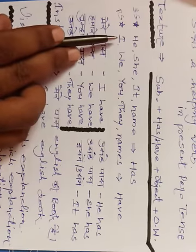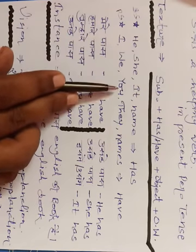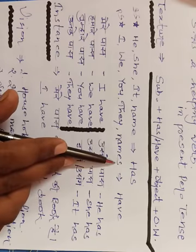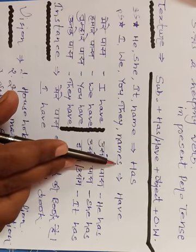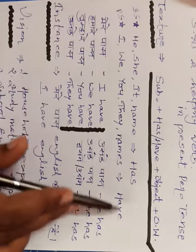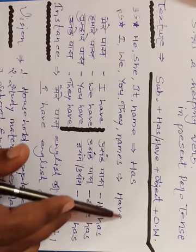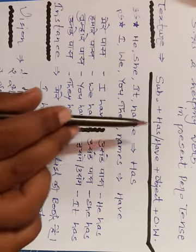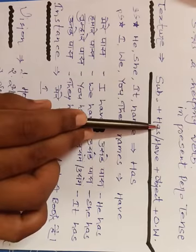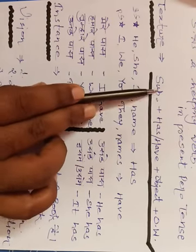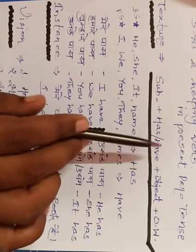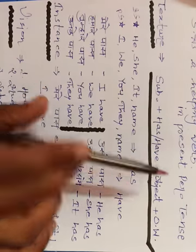Uske paas ek English ki book hai — he has an English book. Ladki ke sense mein bhi: uske paas ek English ki book hai — she has an English book. Isi tarike se aap bahut saare examples set kar sakte hain — mere paas, unke paas, tumhare paas. Agar name mein jaayenge toh: Ram ke paas, Shyam ke paas, Rahul ke paas — in sab ke saath has ka use hoga. Is tarike se hum bahut saare examples put up kar sakte hain has aur have ke sense mein.